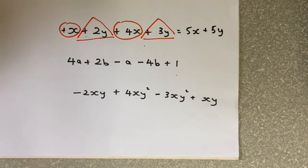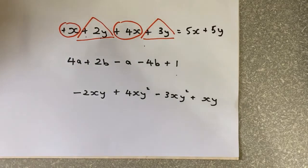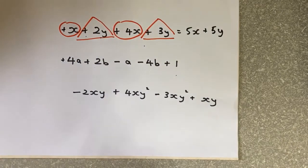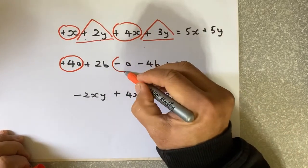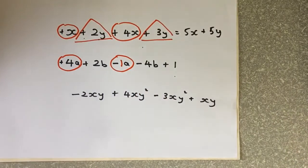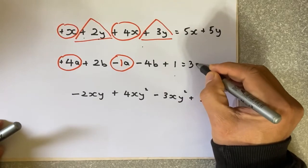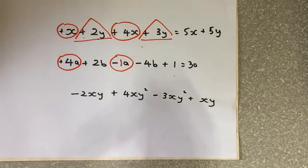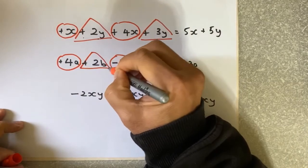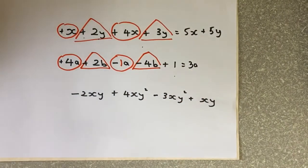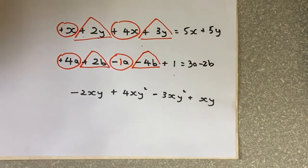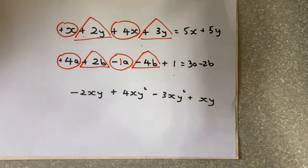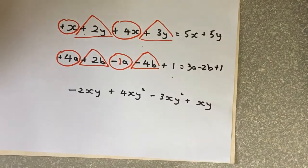The next one is slightly harder. Look for the like terms. The first one is 4A plus 4A minus A. If there's no number, it actually means 1A. So 4A minus 1A - they're the same family - gives you 3A. The second family is the B family: plus B minus 4B. If you have 2 minus 4, you get minus 2B. What happened to this one? This one has no other like term, so you put plus 1 at the end of the equation.